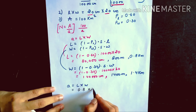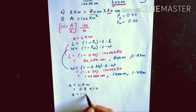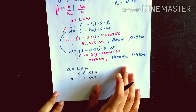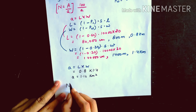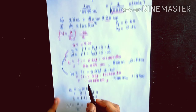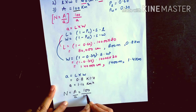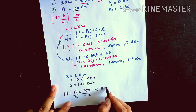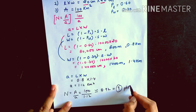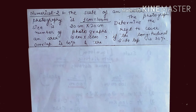The net ground area a = L × W = 0.8 × 1.4 = 1.12 km². Therefore, the total number of photographs N = A/a = 100/1.12 = 89.2, which rounds up to 9 photographs.